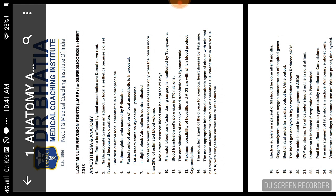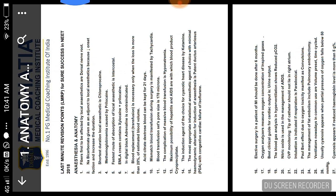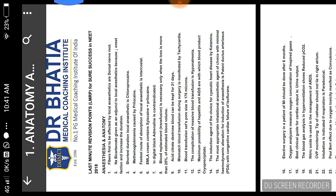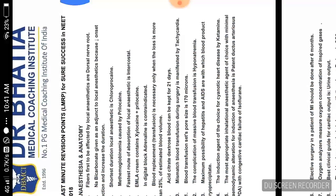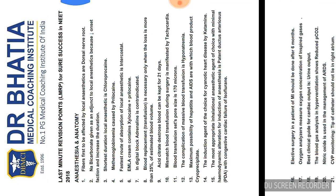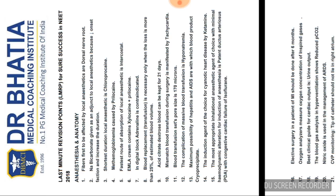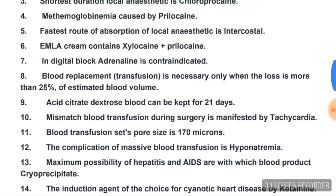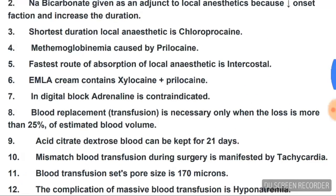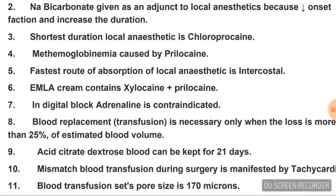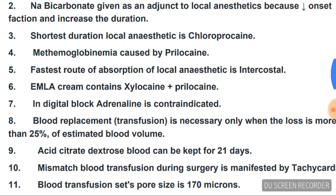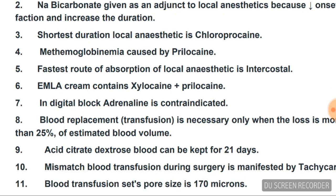Fibers first to be affected by local anesthetics are dorsal nerve root. Sodium bicarbonate is given as an adjuvant to local anesthetic because it decreases the onset of action and increases the duration of action. Shortest duration local anesthetic is chlorprocaine. Methemoglobinemia is caused by prilocaine — that's very important.